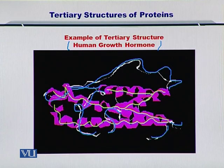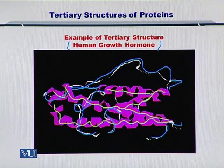So, some of these secondary structures have come together in order to give rise to the human growth hormone protein. In all, this image describes the tertiary structure of this protein. In this way, several proteins can be formed by simply creating different combinations of these alpha helices and turns shown in this figure.